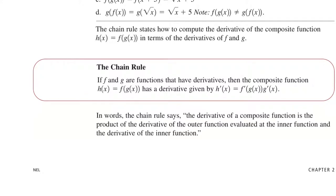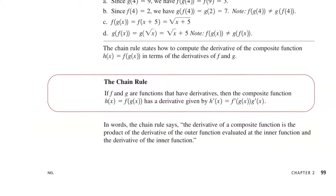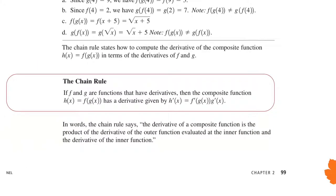In this section, we want to find a formula for finding the derivative of F of G of x. It's called the chain rule. If F and G are functions that have derivatives, then the composite function H of x equals F of G of x has derivative H prime of x equals F prime of G of x times G prime of x. It is the derivative of F with respect to G of x, and the derivative of G with respect to x.